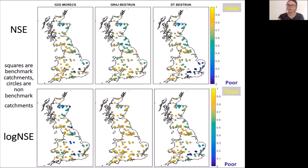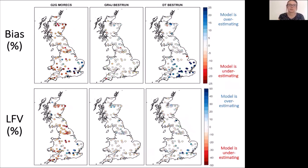If we delve into the model results further by looking at the bias, we can see some reasons for this difference. Each point shows a gauge, with bias percent in the top panel and low flow volume in the bottom panel. Blue shows the model is overestimating water flows and red shows the model is underestimating water flows.